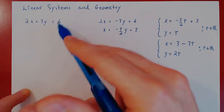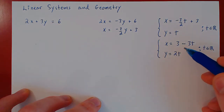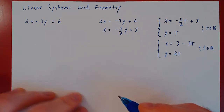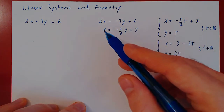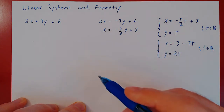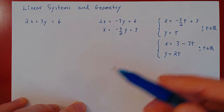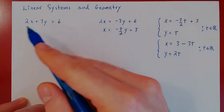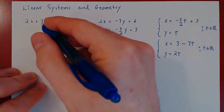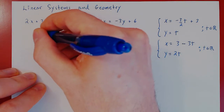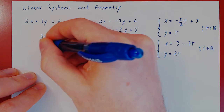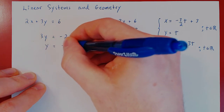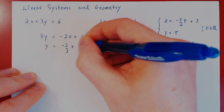This is solving the linear equation algebraically. Now let's look at the geometry in this solution. To solve algebraically, we isolated x as a function of y. For the geometry, it may be more familiar to isolate y as a function of x. So we get 3y equals negative 2x plus 6, divided by 3, and y equals negative 2 over 3 times x plus 2.